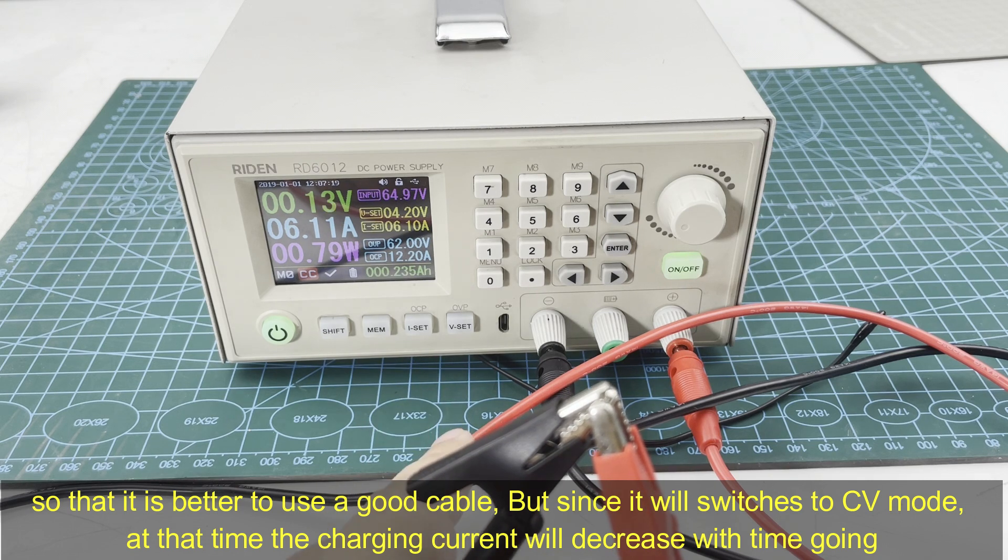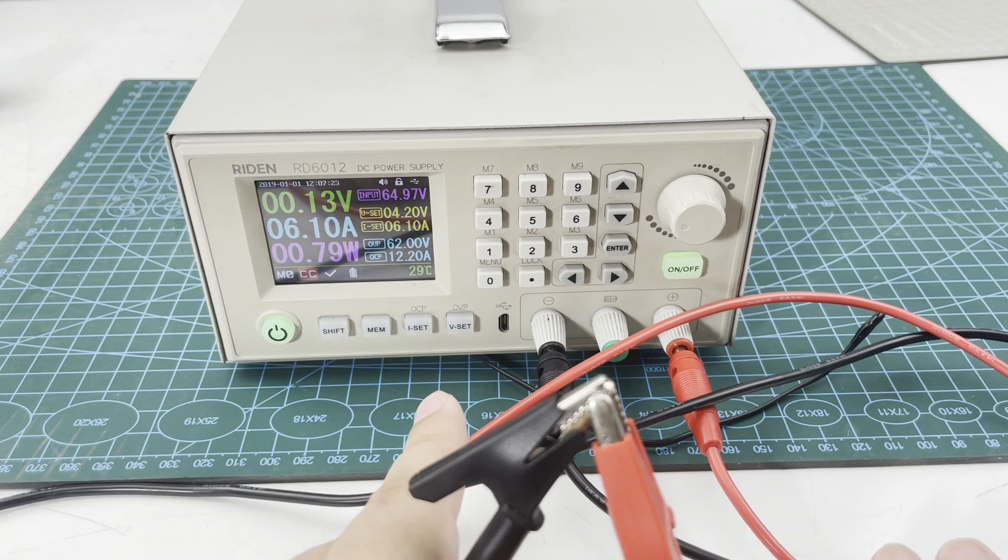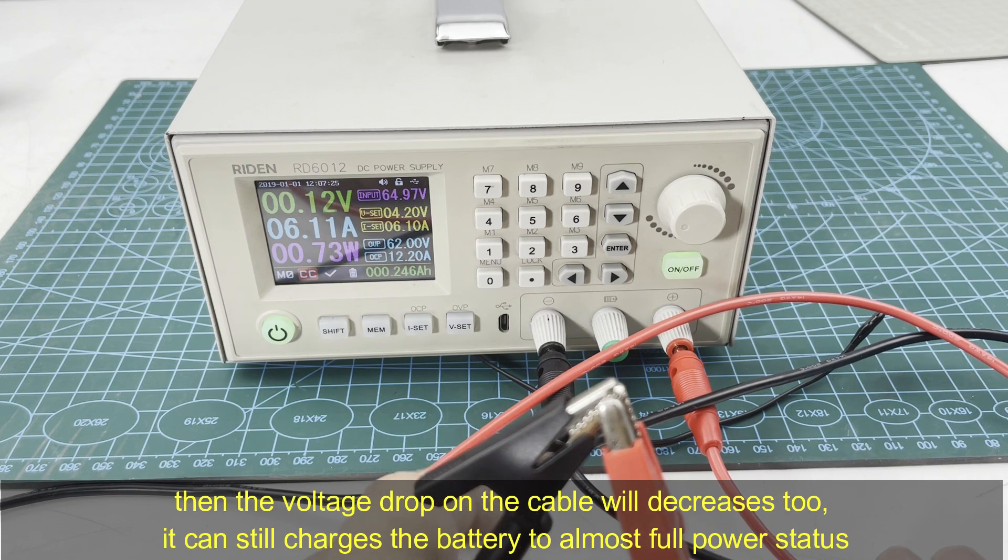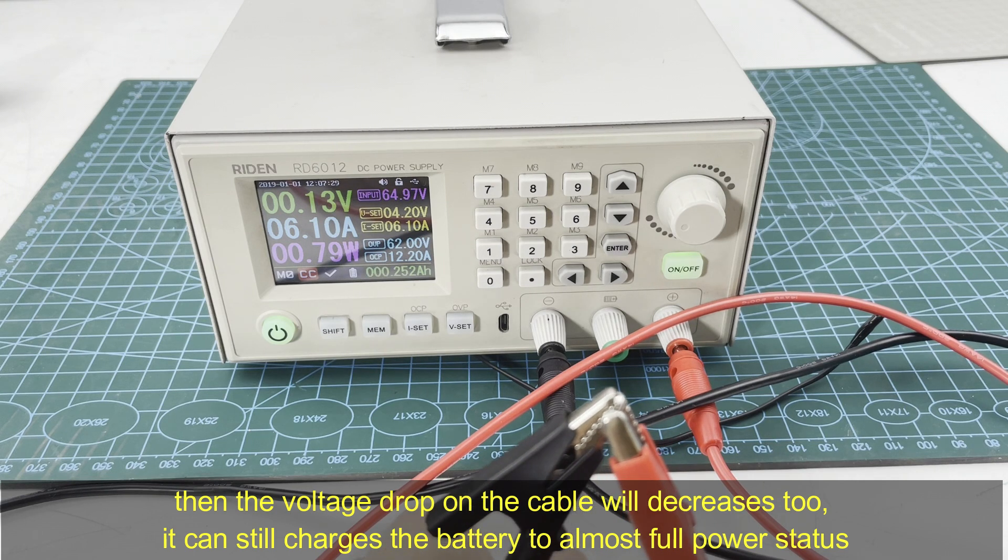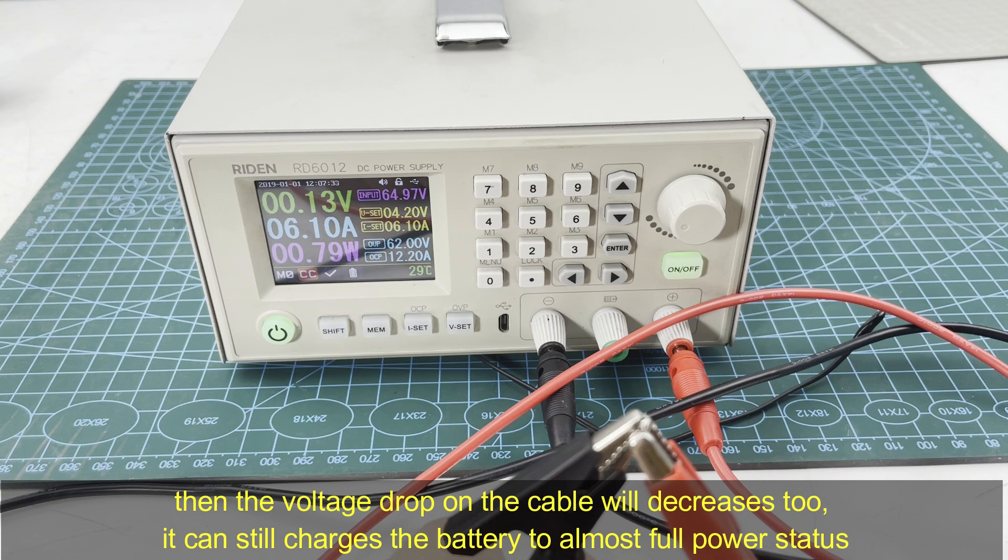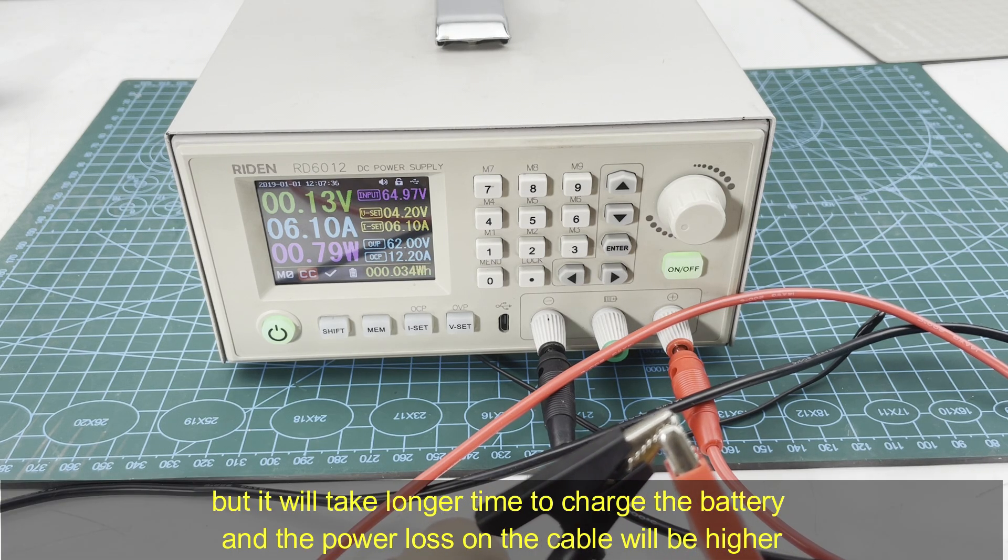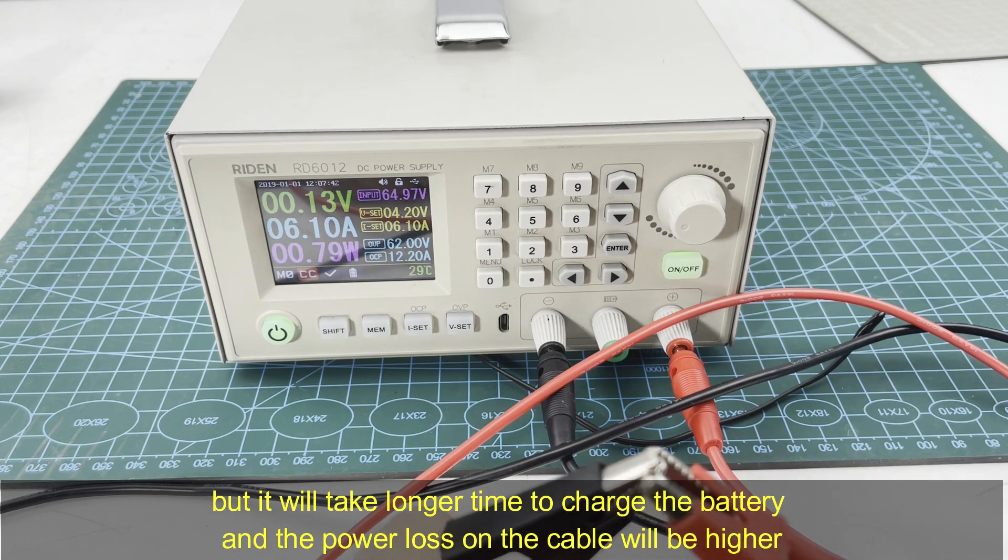But since it turns to CV mode at that time, the charging current will decrease with time going, then the voltage drop on the cable will decrease too. It can still charge the battery to almost full power status, but it will take a longer time and the power loss on the cable will be higher.